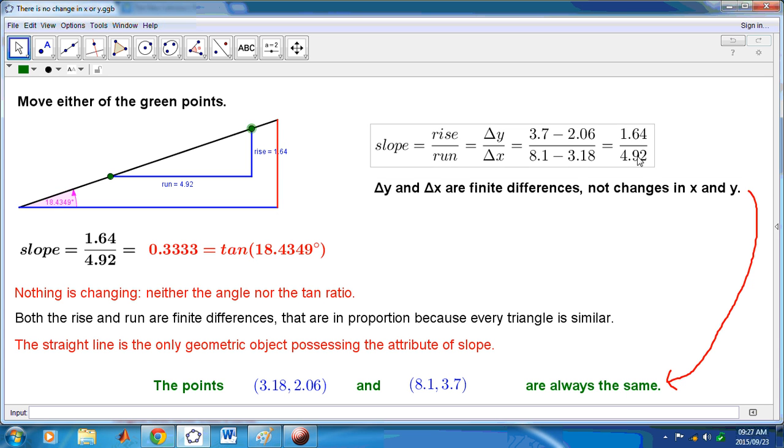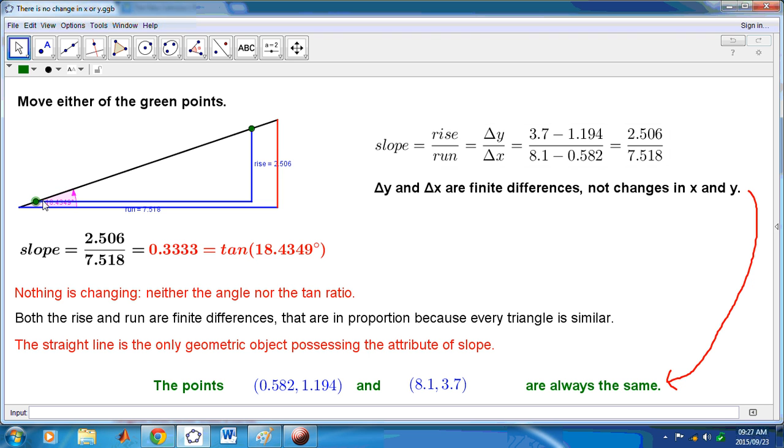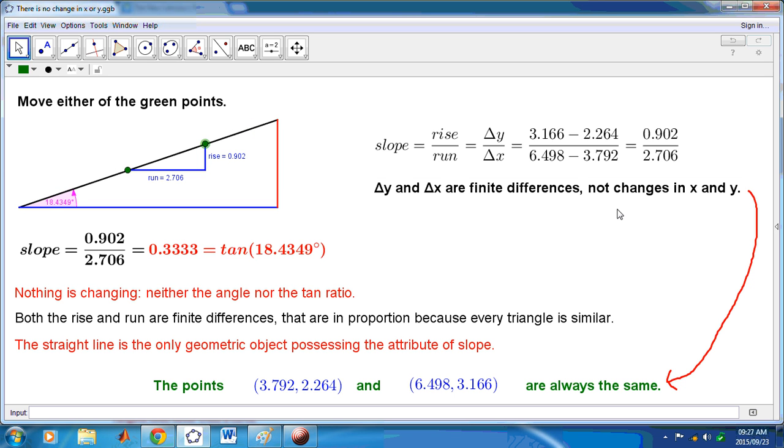Both the rise and the run are finite differences. So, the rise, in this case here is 1.64 and the run is 4.92. Let me move another one of the points there. And the rise changes to 2.5 and the run changes to 7.5. But really, there is no change in x and y. And in fact, the rise and run are always equivalent fractions. So, the ratio is always the same. And nothing is changing.